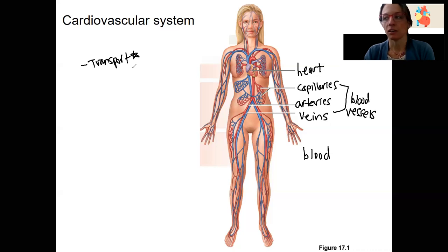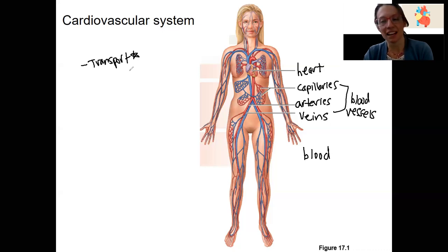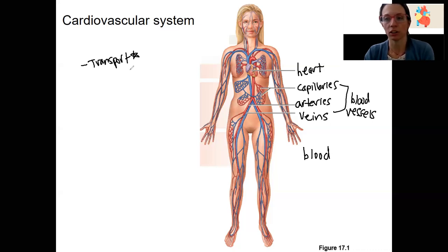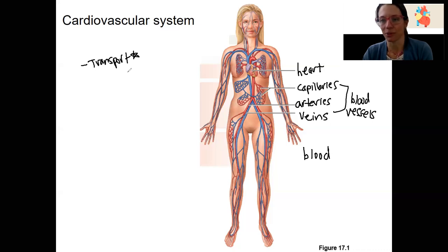We also have to maintain fluid volume, which is neuroendocrine regulated, but also even like last week, we talked about blood clotting and the formation of a coagulation. That's part of maintaining fluid volume as well. So that's where blood — you can really see its role in this as well, of course also being the thing that transports.